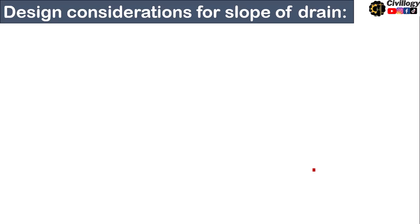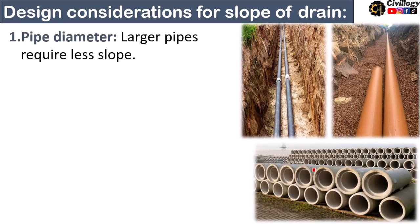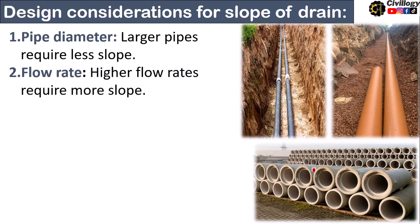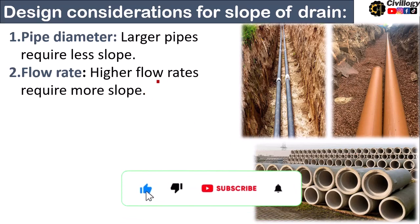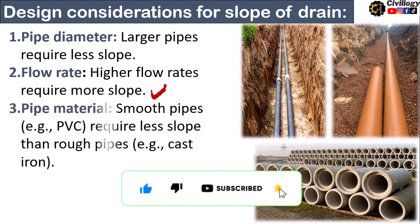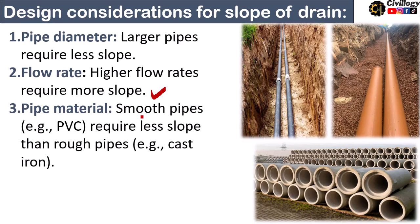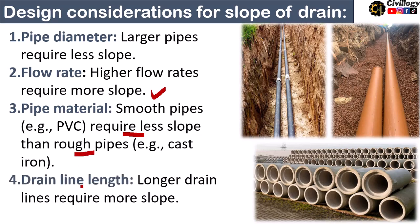Now, what are the design considerations for slope of drain? Pipe diameter must be considered before selecting a slope for a certain area. Larger pipe requires less slope and the flow rate also plays important role before selecting a slope. Higher flow rates require more slope. The third point to be considered is pipe material. As we know that in market, pipes are available in different materials like cast iron or PVC or RCC. Smooth pipes, for example PVC, requires less slope than rough pipes, for example cast iron. The fourth point is drain line length. Longer drain line requires more slope.